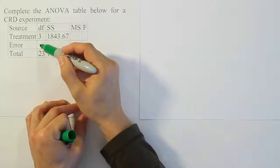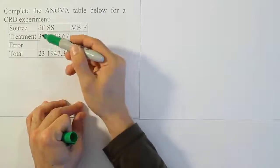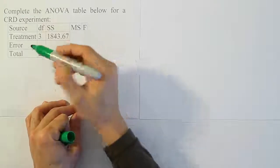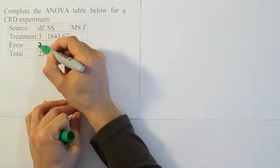In order to figure out the degrees of freedom for error, that first missing box, we just have to subtract the treatment degrees of freedom from the total degrees of freedom. When you do 3 from 23, of course, you get 20.